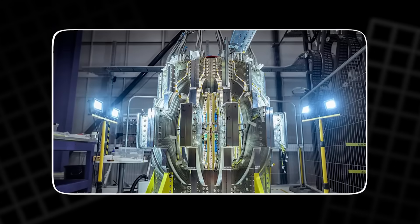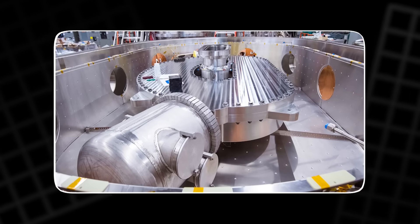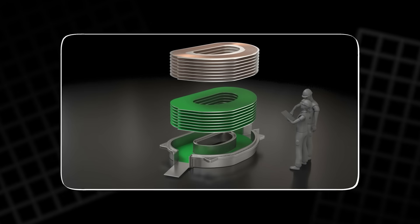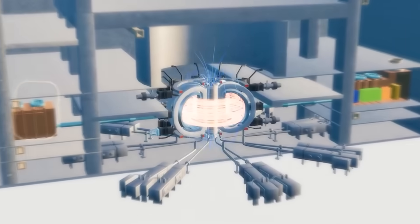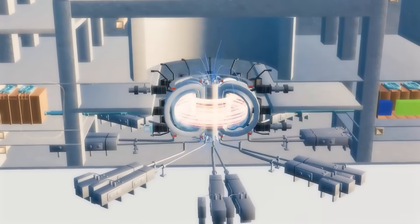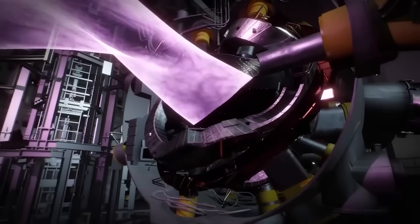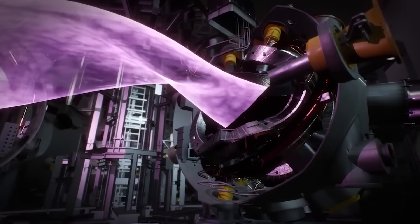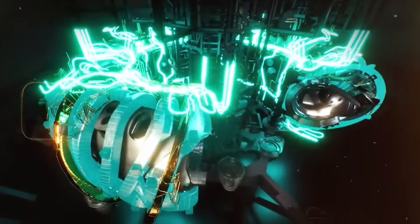Stellaris also leans on high-temperature superconducting magnets. Traditional superconductors need extreme cold, close to absolute zero. High-temperature superconductors still need cooling, but they can work around minus 196 degrees Celsius, which is far easier to manage. Stronger magnets let the whole reactor shrink, and smaller means cheaper, faster to build, and easier to repeat.